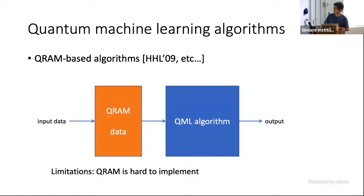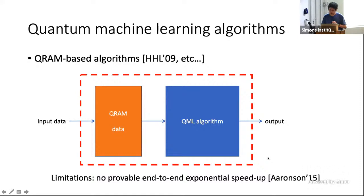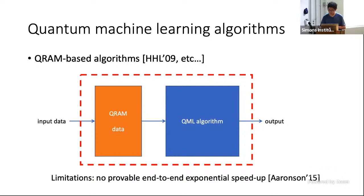On the other hand, there are also several limitations with QRAM-based algorithms. We have some classical input data stored in QRAM, and then use the quantum machine learning algorithm to access data from the QRAM and generate classical outputs. However, QRAM is very hard to implement in practice. Furthermore, the exponential speedup of these algorithms disappears when we think about the algorithm as an end-to-end procedure. If we think about the algorithm as the red box rather than the blue box, the exponential speedup disappears, because it is unknown if we can efficiently load data into QRAM — the first step becomes the bottleneck of the entire procedure. Aaronson has a nice viewpoint article on this issue.